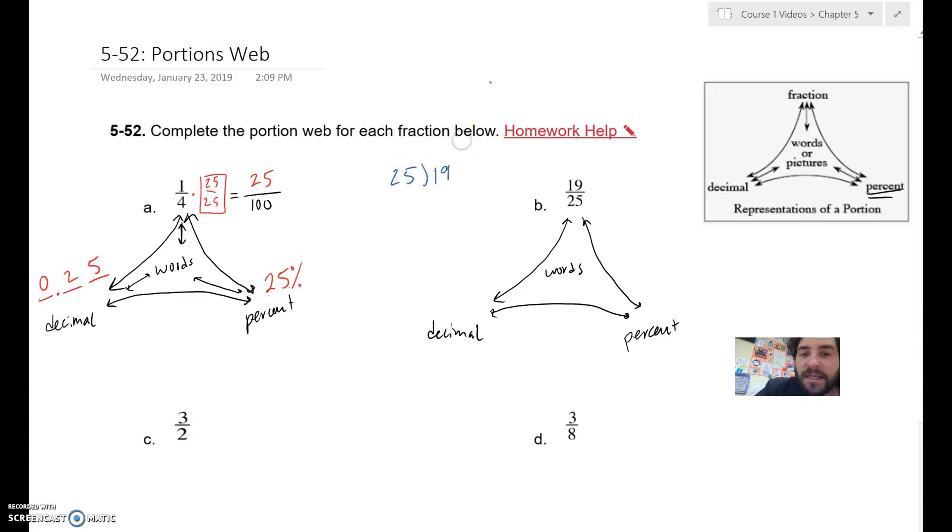Let's do 19 divided by 25. Well, 19 doesn't go into 25 evenly, so we're going to add a decimal at zero times, and let's just make this 190. Now that's 190 tenths. So I know 25 goes into 100 four times, and this is really close to 200, so that would be 8. If it was 200, it would be 8 25s. So let's do 7.